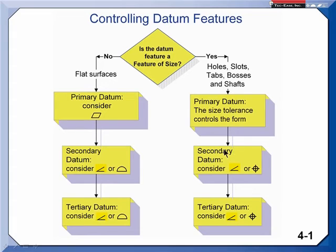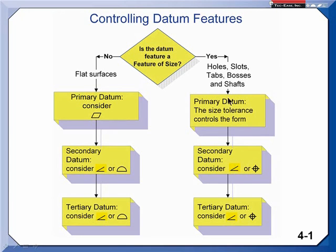Your secondary and tertiary datum features often will need an orientation control — I'm saying angularity, which can cover all of the orientation tolerances, or you might want to go with perpendicularity or parallelism. And occasionally, these datum features need to be located relative to the higher precedent datums, so we're going to have to use position.